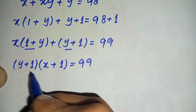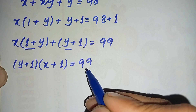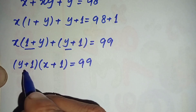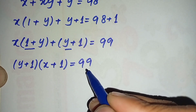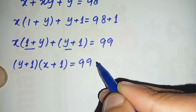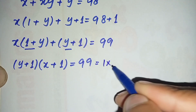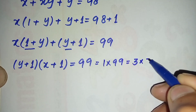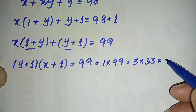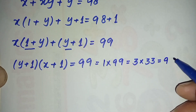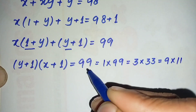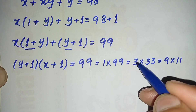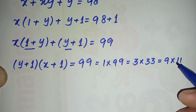Since the product of these two expressions equals 99, we will factorize 99 as a product of two numbers and compare each expression. We can write 99 as: 1×99, 3×33, 9×11, and also the reverse pairs: 99×1, 33×3, and 11×9. So there are six possible pairs of solutions.